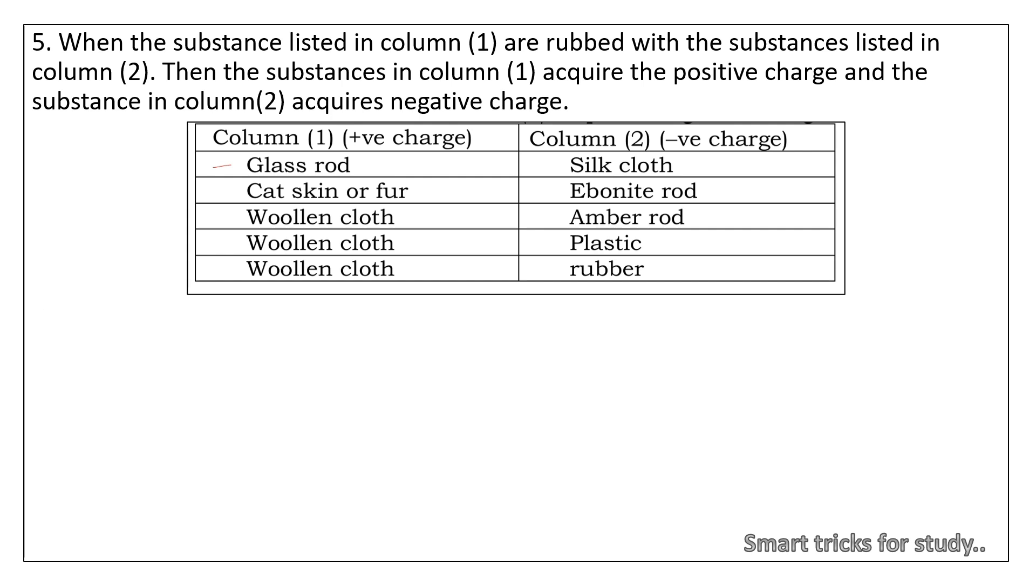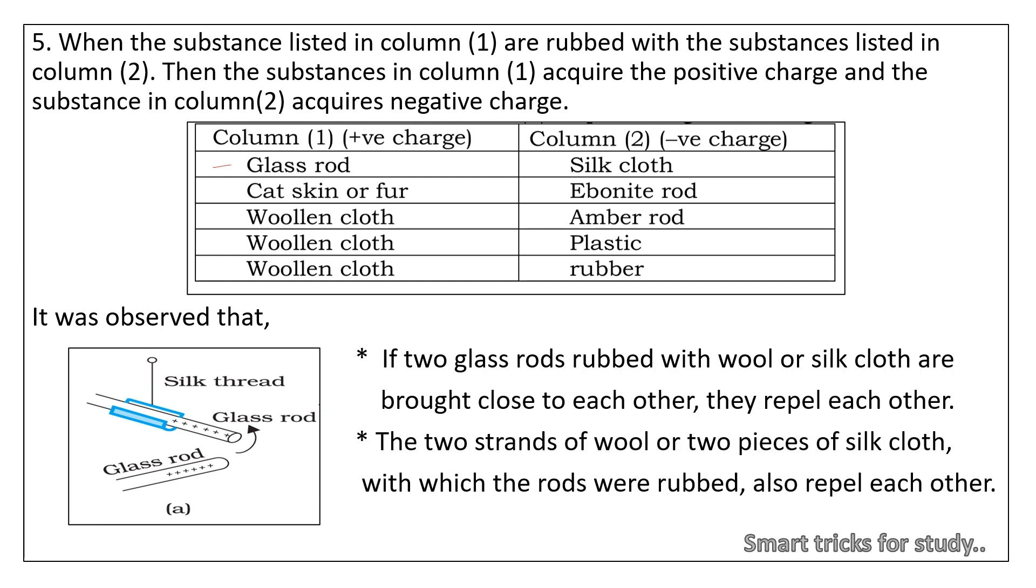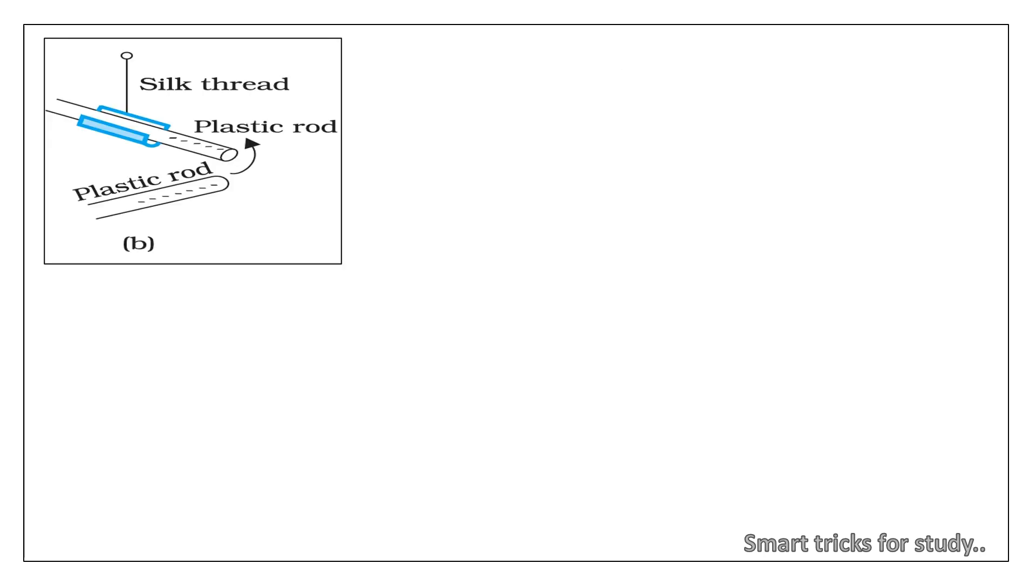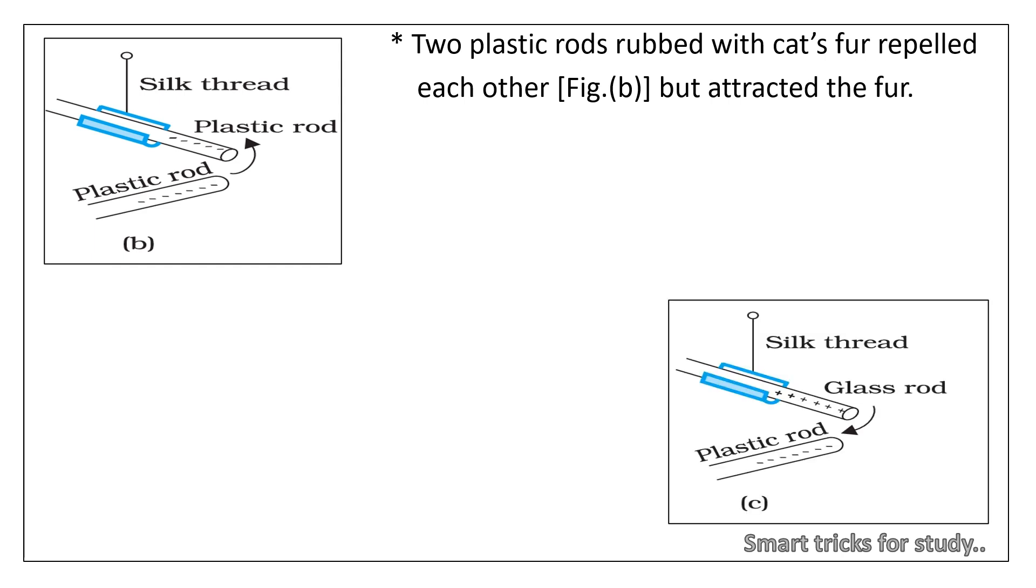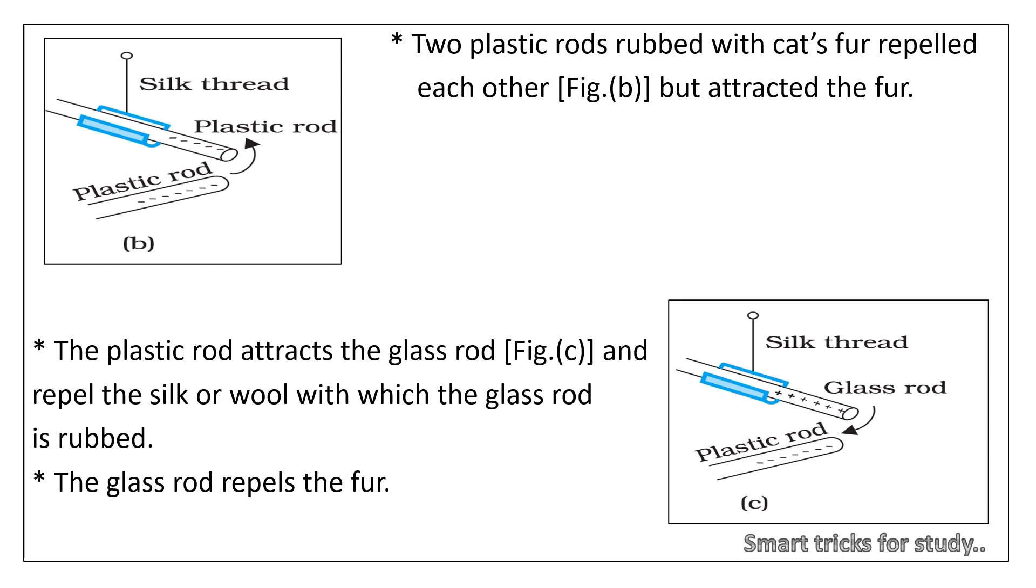Let's look into brief explanation. It was observed that if two glass rods rubbed with wool or silk cloth are brought close to each other, they repel each other. The two strands of wool or two pieces of silk cloth with which the rods were rubbed also repel each other. Two plastic rods rubbed with cat's fur repelled each other, but attracted the fur. The plastic rod attracts the glass rod and repels the silk or wool with which the glass rod is rubbed. The glass rod repels the fur.